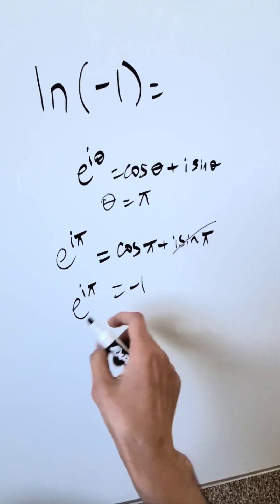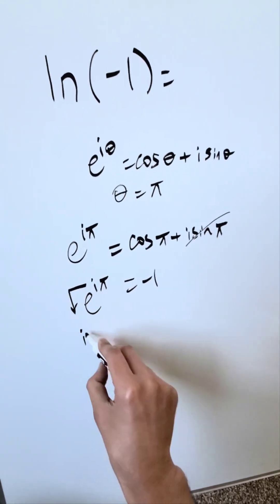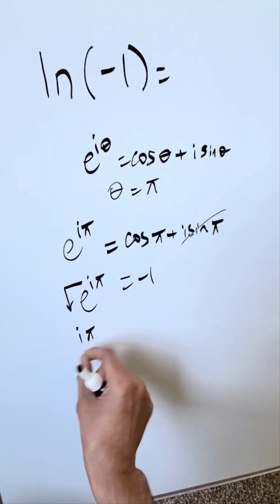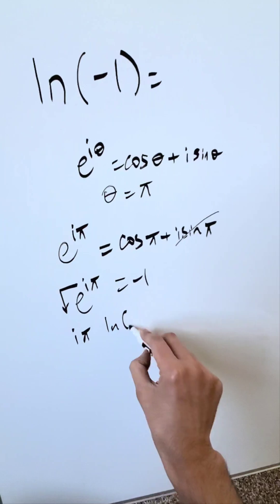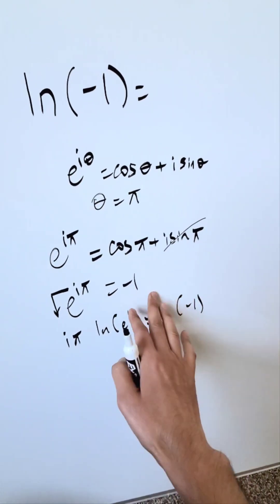Bring in your properties of logs where the exponents can be converted to coefficients. I have i and pi together coming as a coefficient. Natural log of E is equal to natural log of minus 1. I've invoked the properties of logs here.